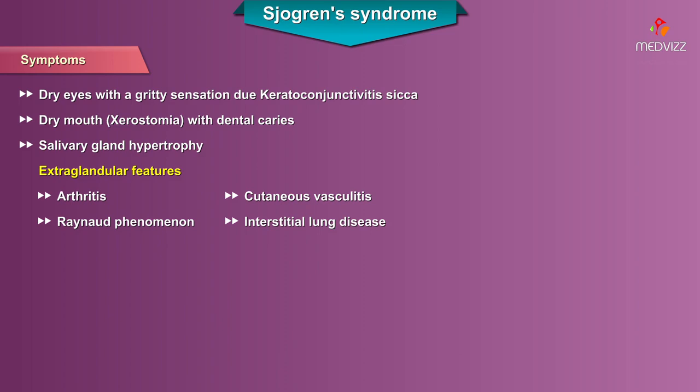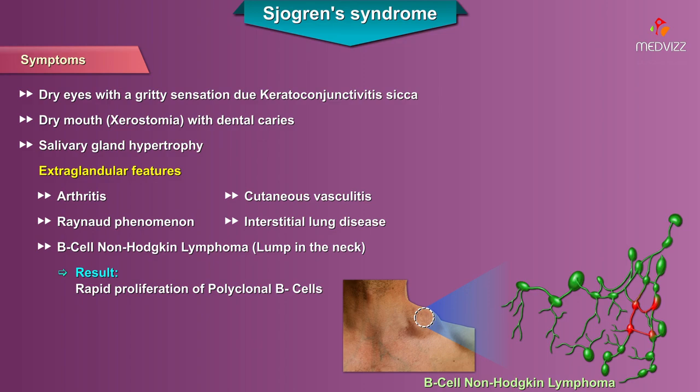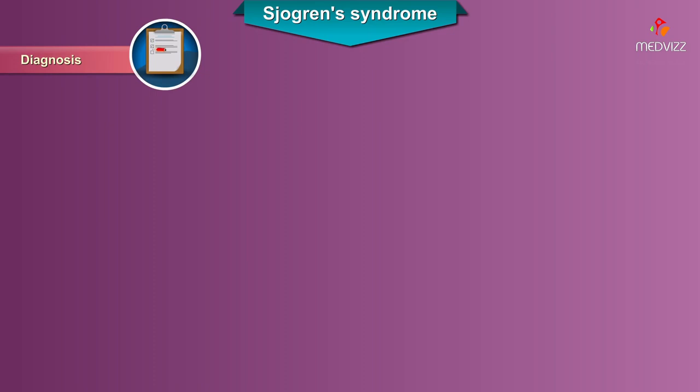Any lump in the neck should raise suspicion for B-cell non-Hodgkin's lymphoma, as the disease process can result in rapid proliferation of polyclonal B-cells in Sjogren's syndrome, which might give rise to a B-cell non-Hodgkin's lymphoma.